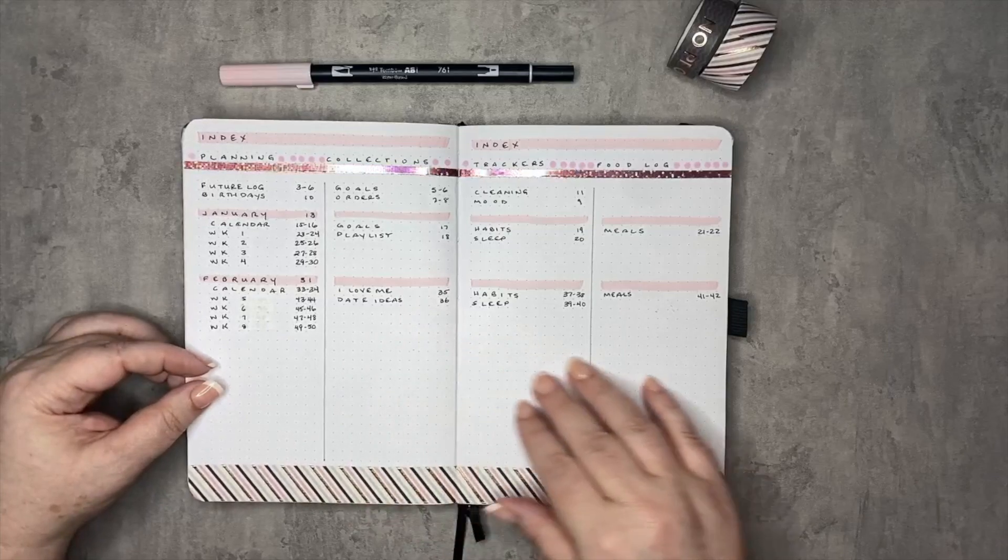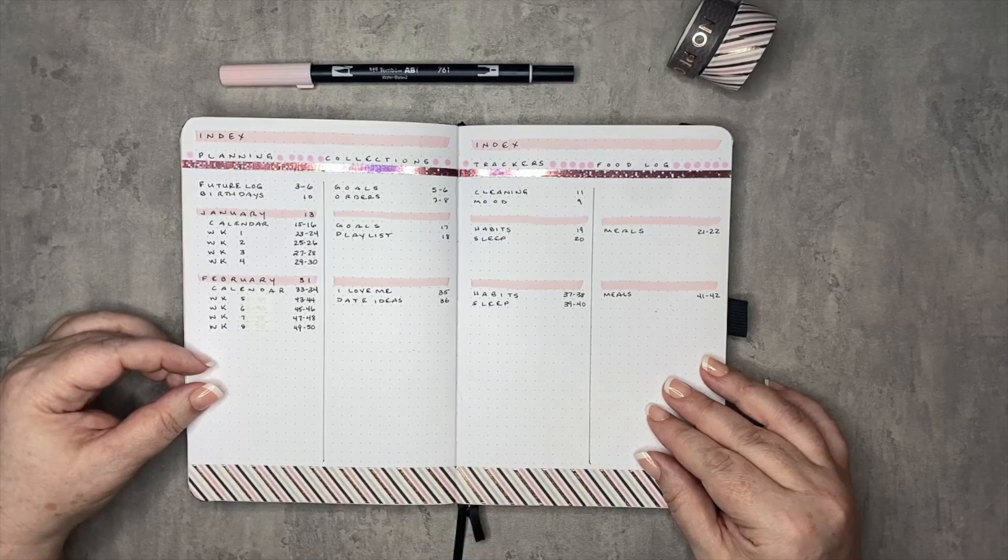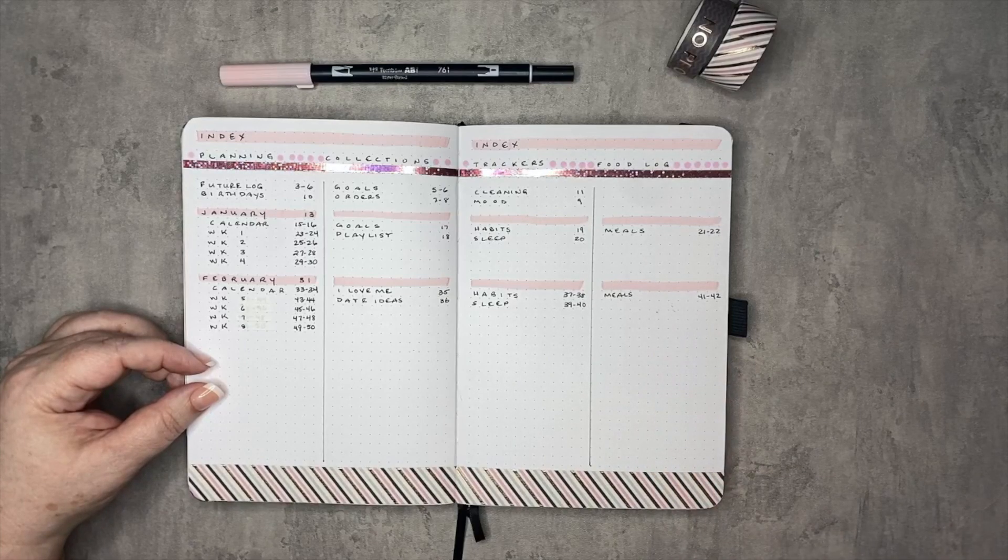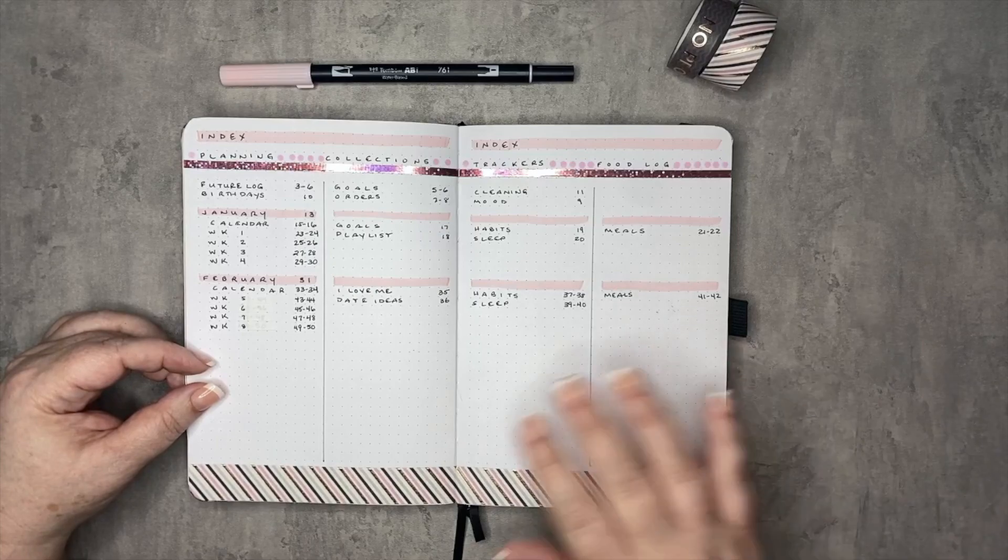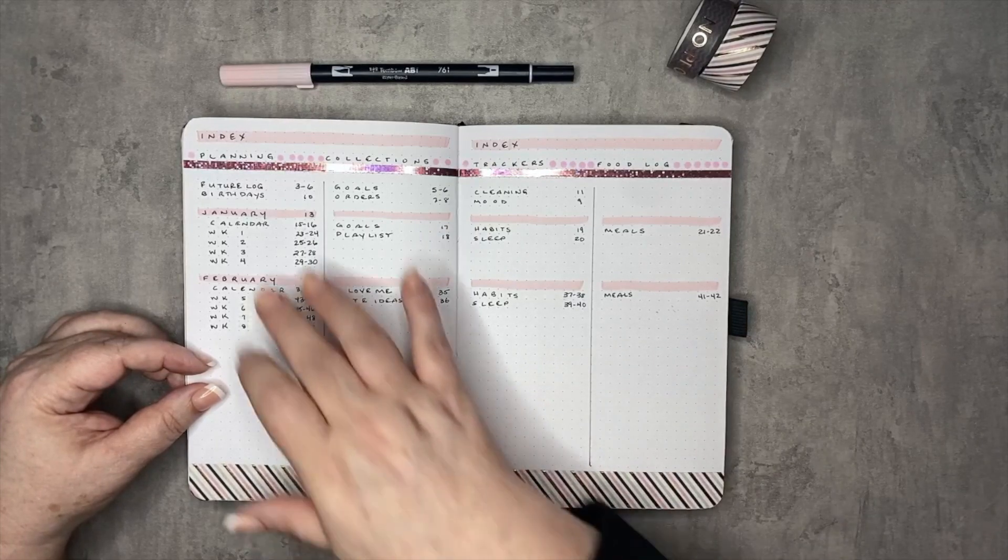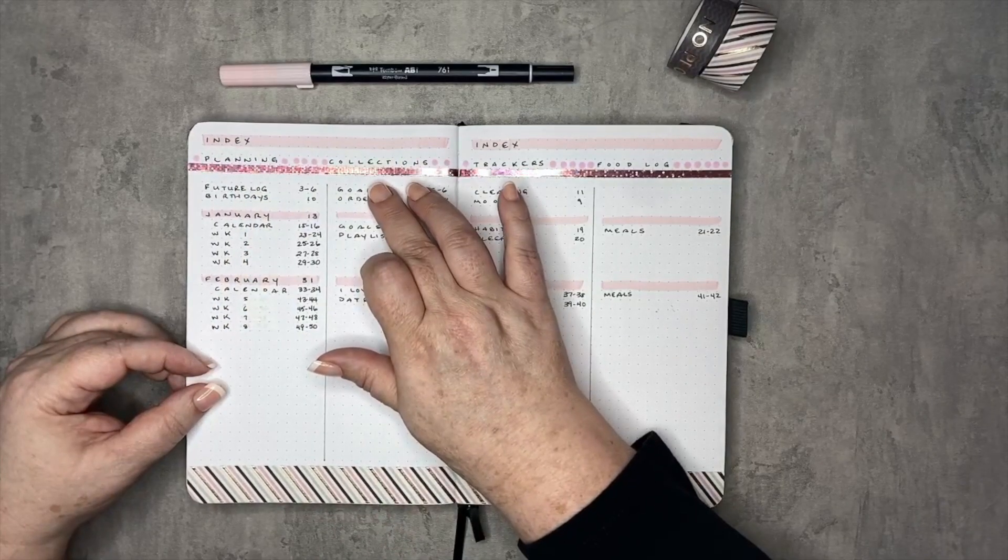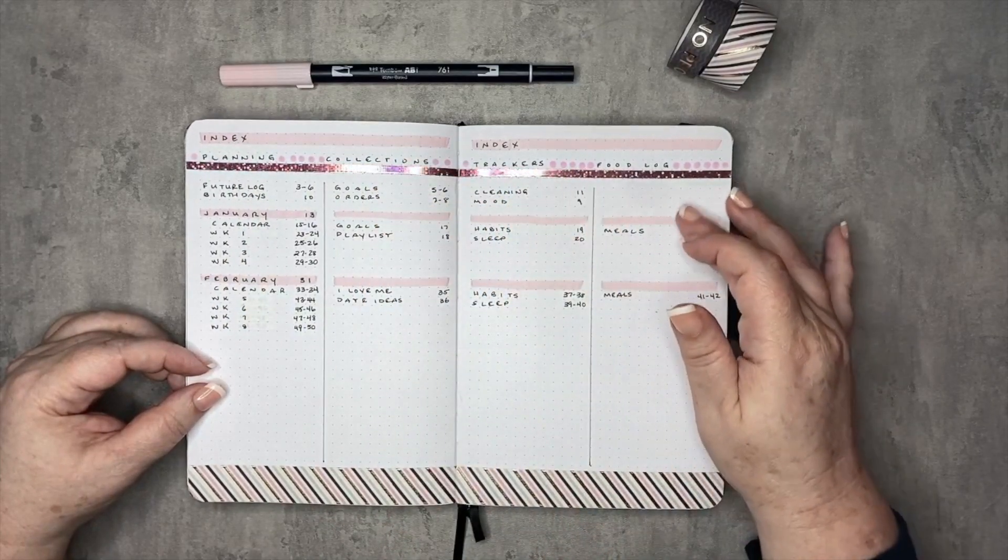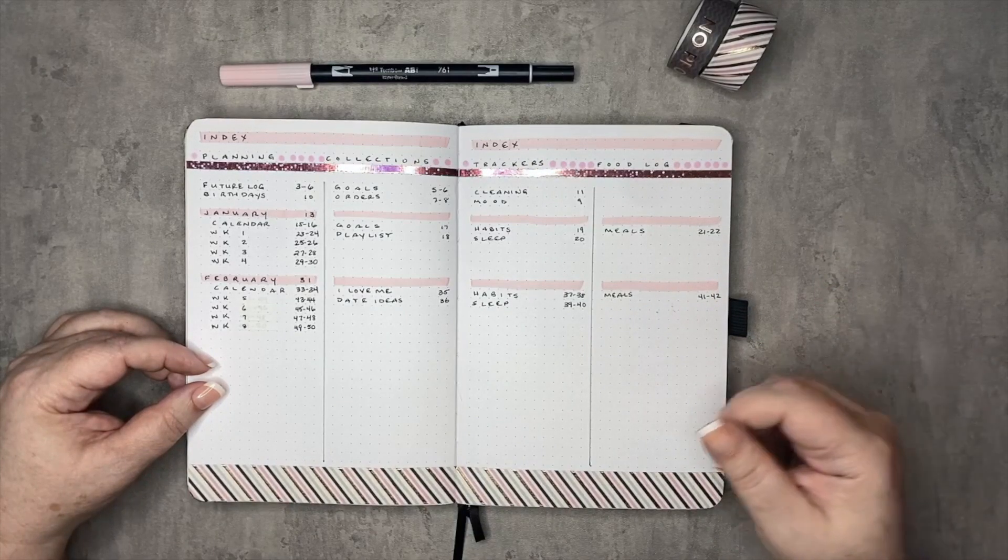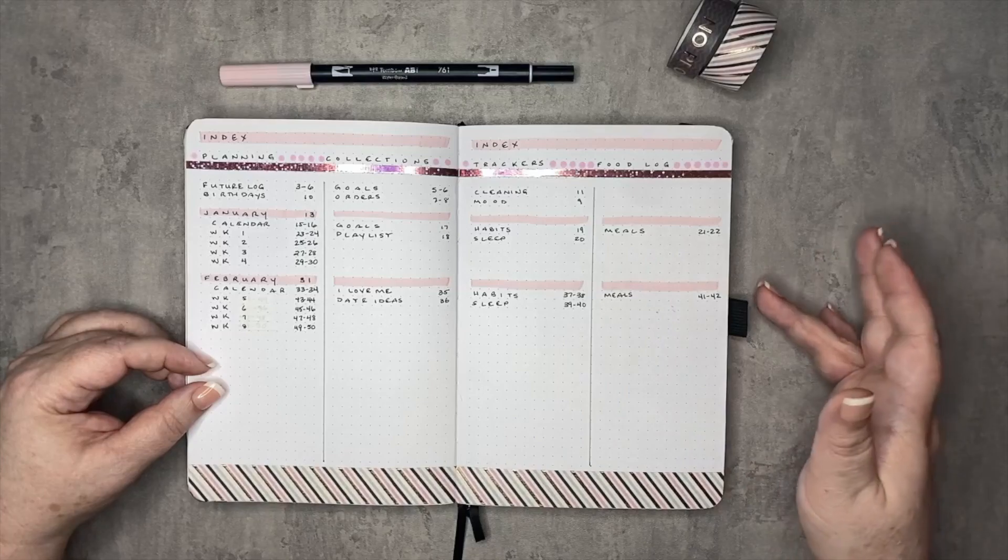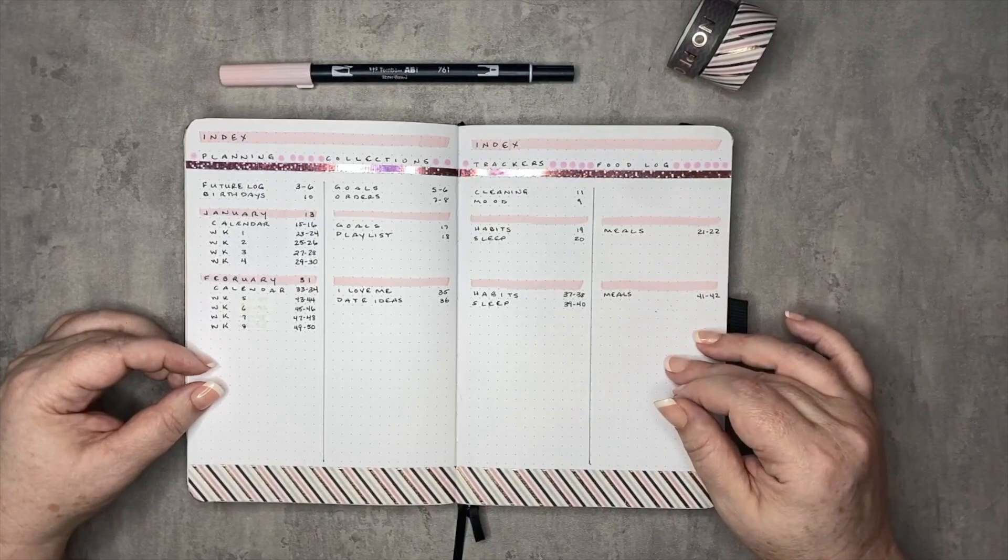This next one is separated out by collection. So if you're that type of person that doesn't want to look at things sort of linearly in a calendar mode, you would rather see where all of your collections are living at any one time. This is the index for you. So here on the left side is everything that is planning related. These are collections, trackers, and then I just put a food log. It could be any sort of collection that you always have in your journal or any sort of page, maybe financial.